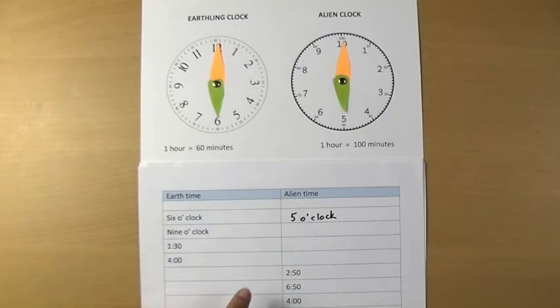can you work out what time it is on Earth when the alien clock says two fifty, six fifty and four o'clock? I leave it to you.